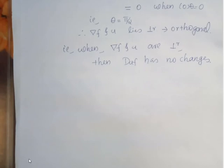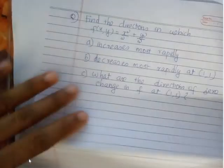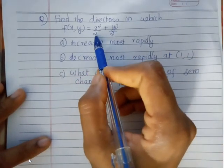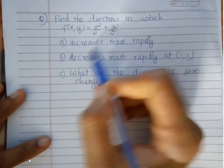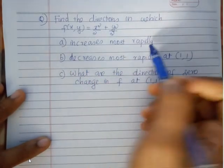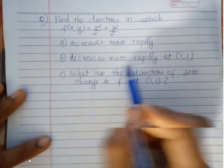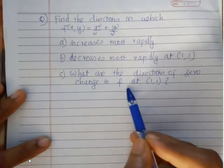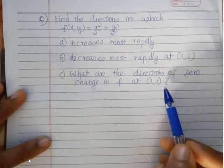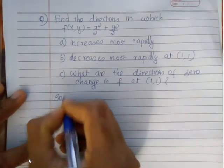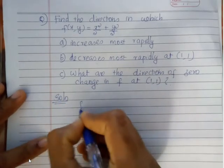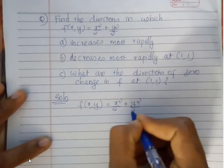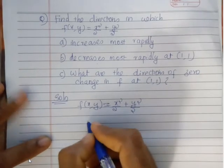Next, let's do a problem. Find the direction in which f(x, y) = x²/2 + y²/2: first, increases most rapidly; second, decreases most rapidly at (1, 1); and third, what are the directions of zero change in f at (1, 1)? The solution: given f(x, y) = x²/2 + y²/2.